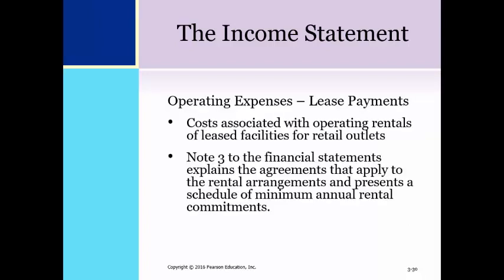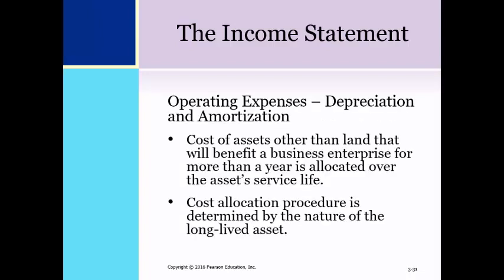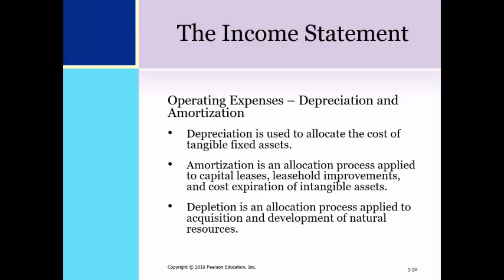Lease payments include the cost associated with operating rentals of lease facilities for retail outlets. Note three to the financial statements for Sage Inc. explains the rental arrangements and presents a schedule of minimum annual rental commitments. Depreciation and amortization represent the cost of assets other than land that will benefit a business enterprise for more than one year; the cost is allocated over the asset's service life rather than expensed in the year of purchase. Land is an exception because it is considered to have an unlimited useful life. Depreciation is used to allocate the cost of tangible fixed assets such as buildings, machinery, equipment, furniture, fixtures, and motor vehicles. Amortization is applied to capital leases, leasehold improvements, and the cost expiration of intangible assets such as patents, copyrights, trademarks, and franchises.